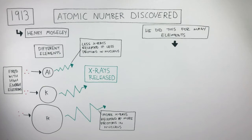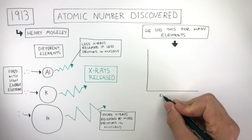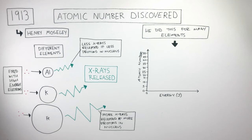Moseley plotted his results on a graph, where energy is on the x-axis and the unit is joules, and the atomic number is on the y-axis.